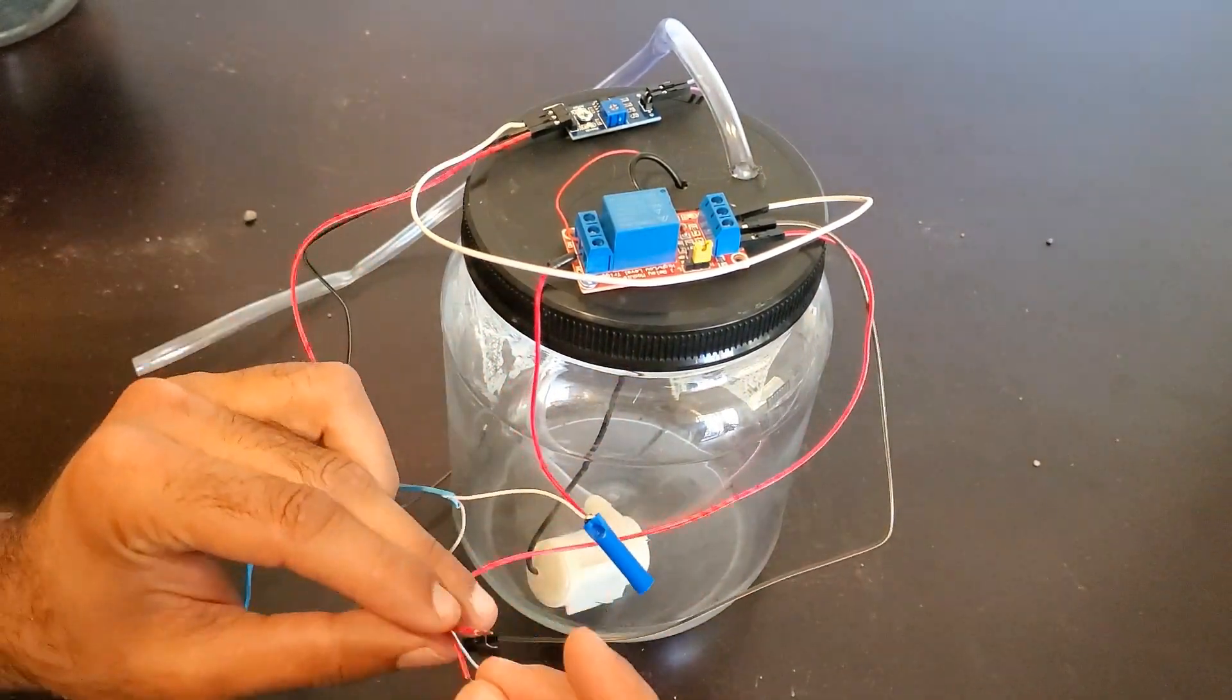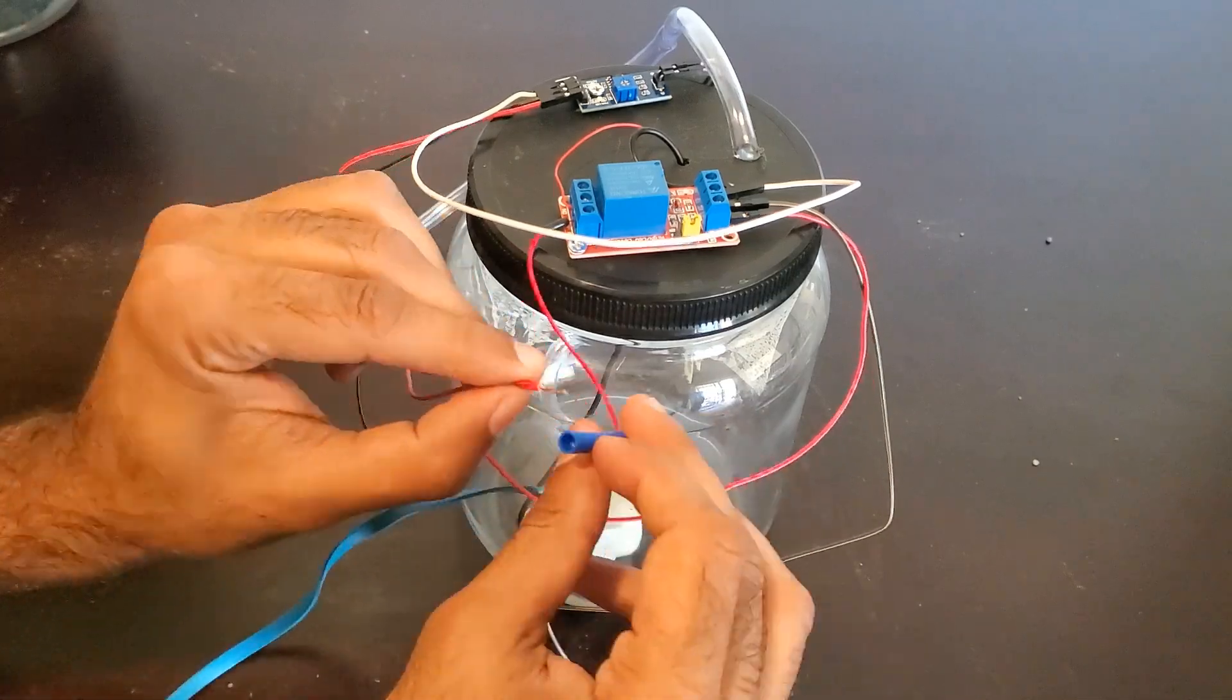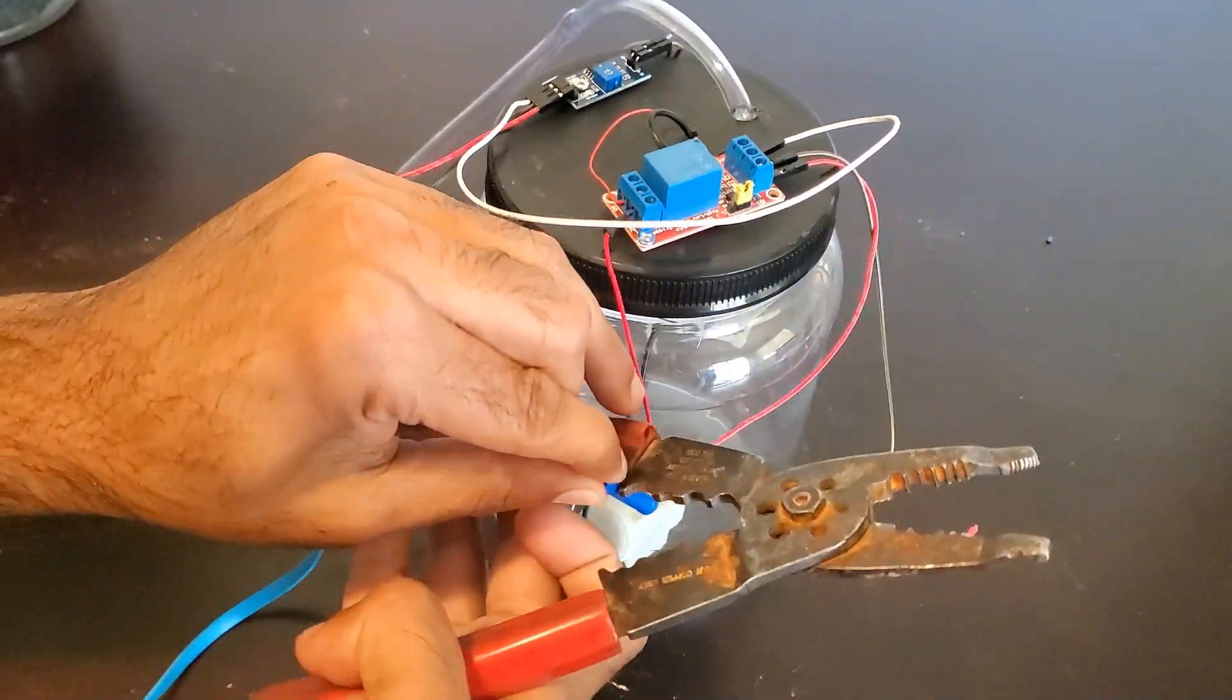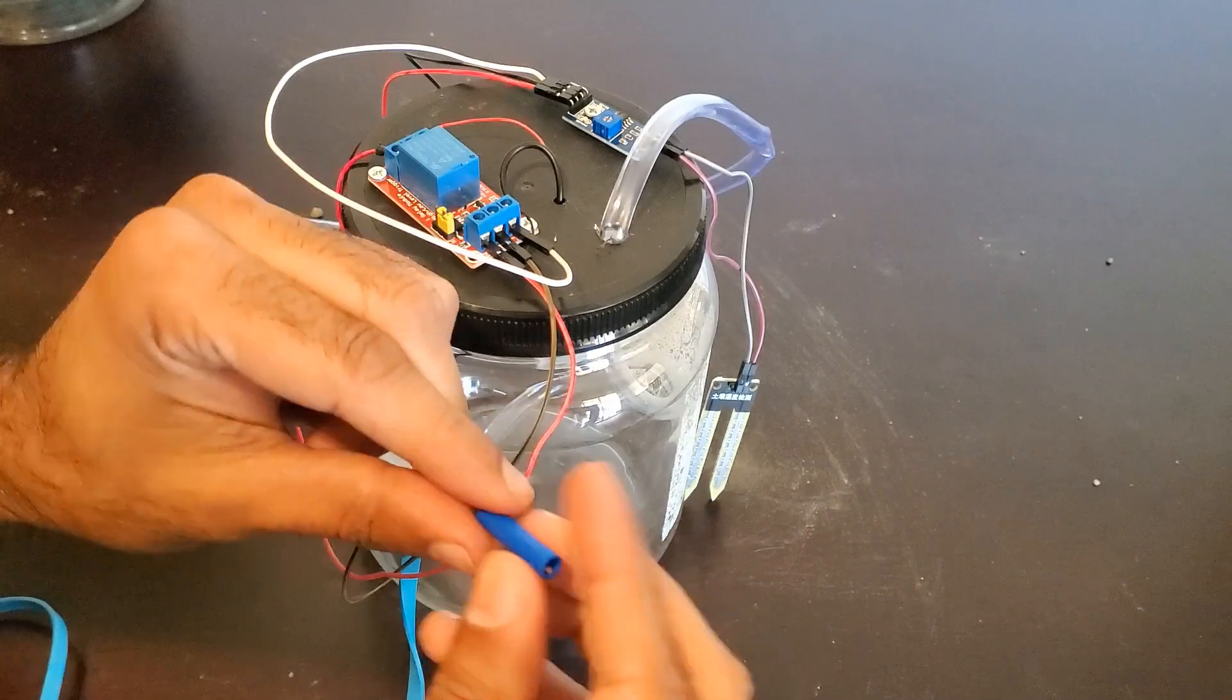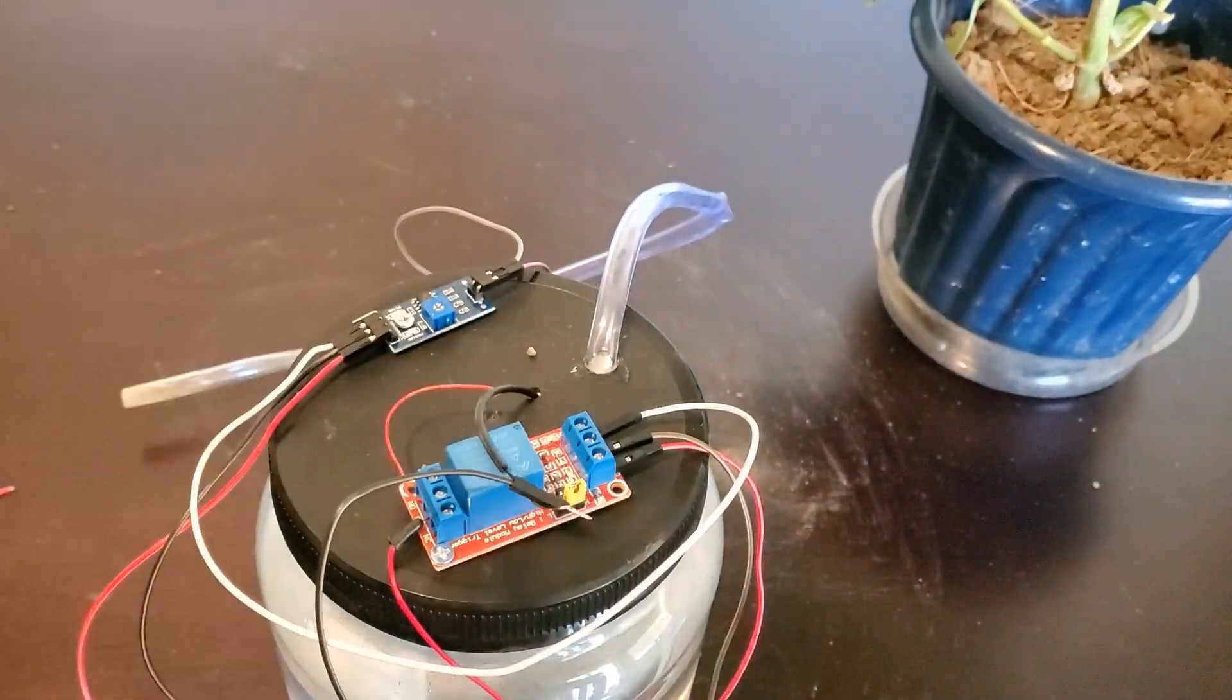Use a butt connector to connect all the positive wires to each other, then use another butt connector to connect all the negative wires to each other. I recommend putting two wires into each side of the connector.